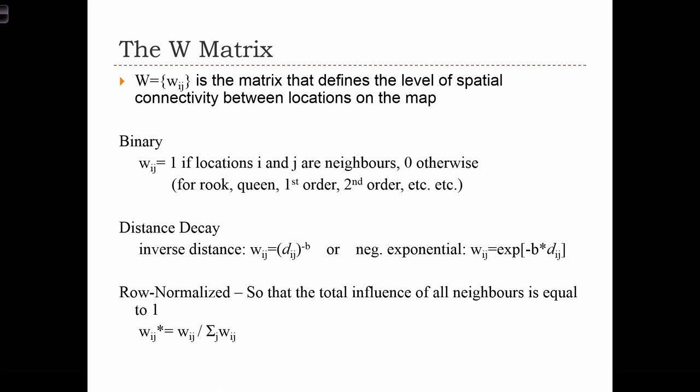The W matrix defines the level of spatial connectivity between pairs of locations on the map.